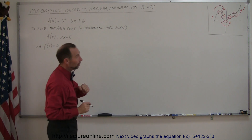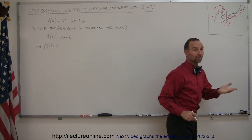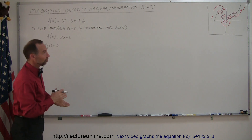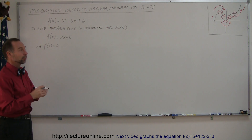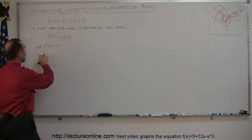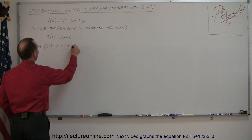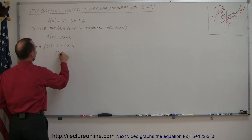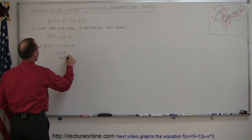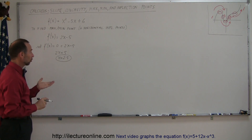That makes a lot of sense, because when you're trying to find any horizontal points on the graph, that's where the slope is 0. Since the first derivative of a function is the slope, if you set it to 0 you will find the values of x where the slope is 0. So we set f prime of x equal to 0: 2x minus 5 equals 0, which means 2x equals 5, or x equals 2.5. At x equals 2.5, there is one point where the slope is 0.